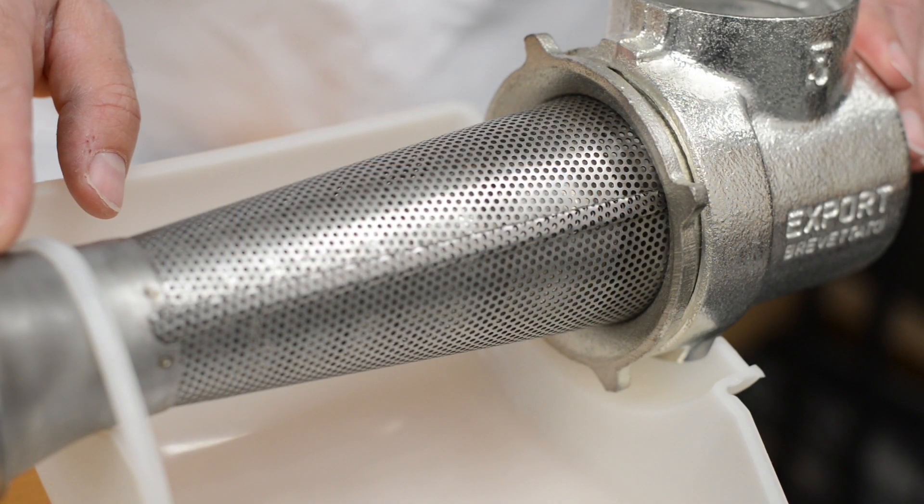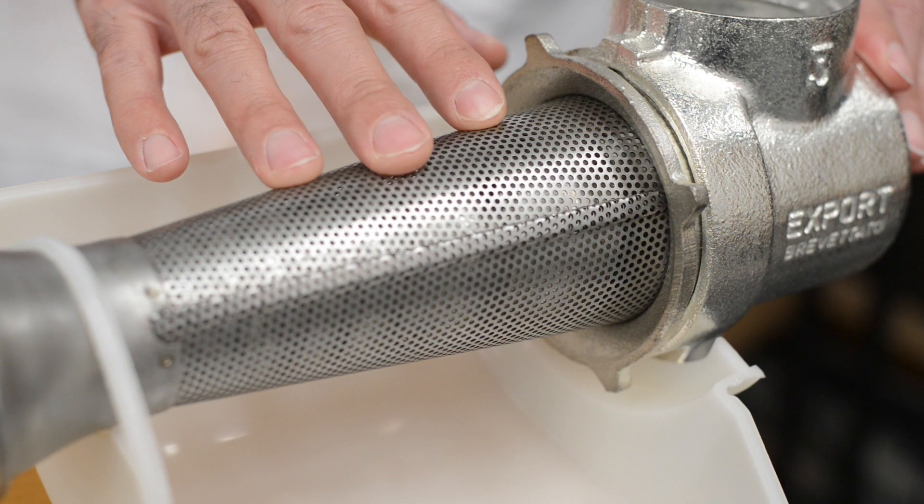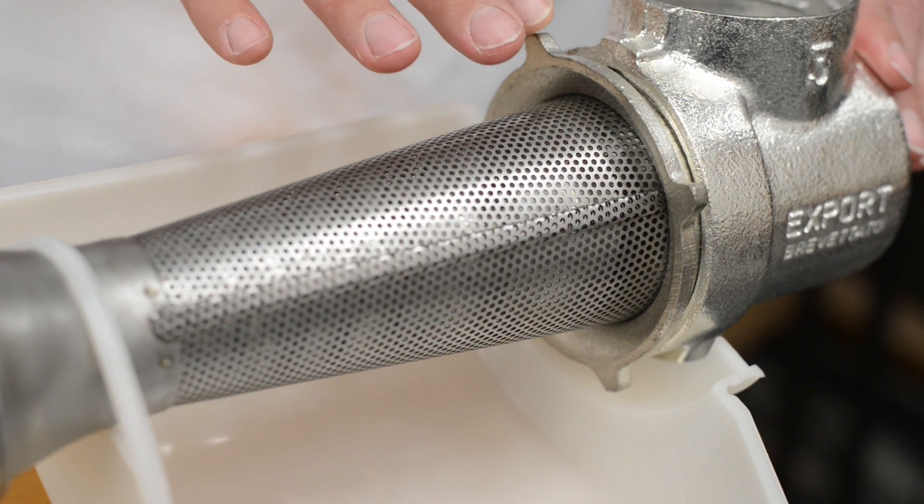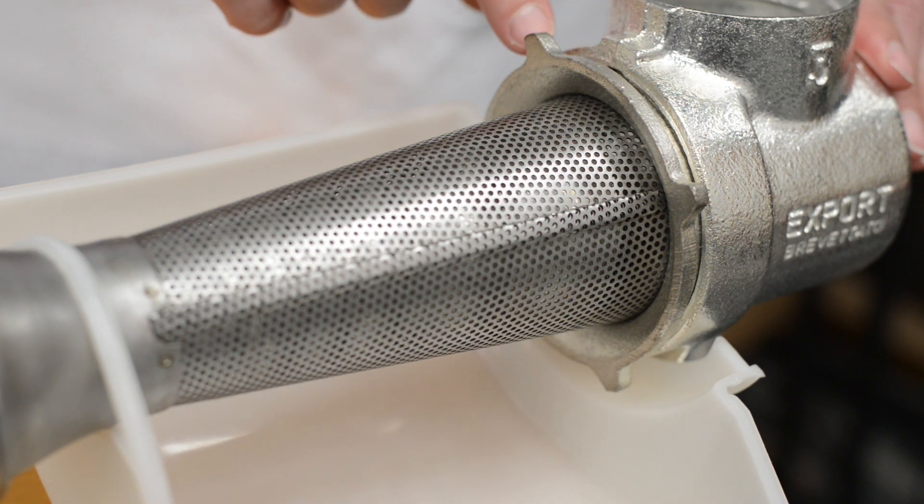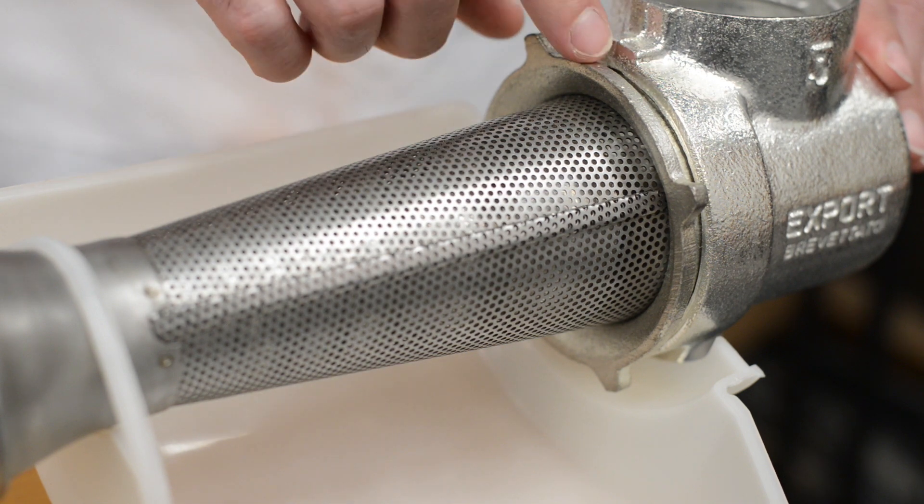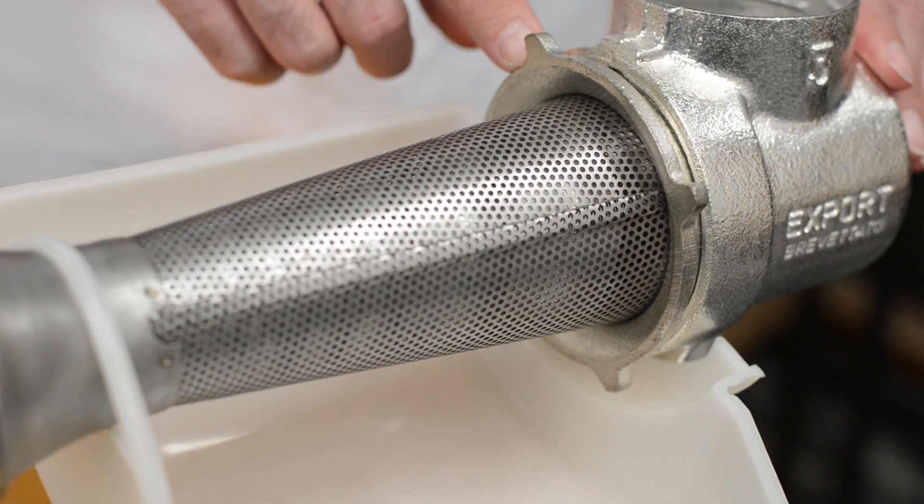The SP3, being a larger scale hand crank tomato milling machine, shares one of the attributes that the commercial Fabio-Leonardi machines feature. It's a gasket-less attachment from the screen to the body of the unit. This threading screws in but it does not have a rubber gasket.